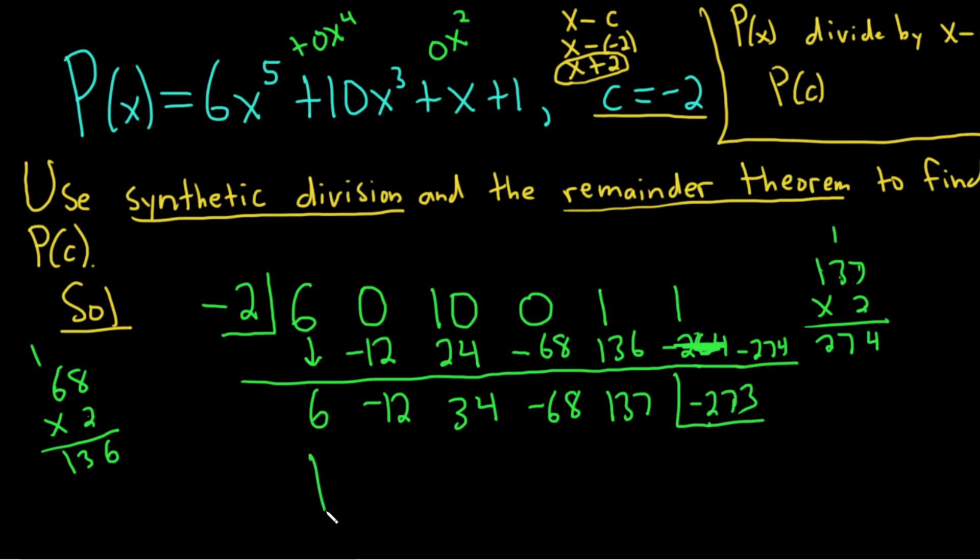That's the answer. That's actually P of negative 2. That's what the remainder theorem says, right? Because this is the remainder, right? This is the remainder when you complete the synthetic division process.